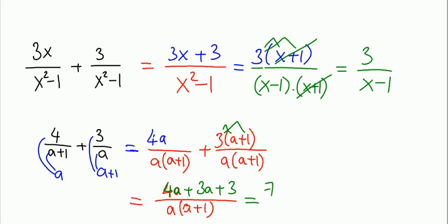So 7a plus 3 over a times (a plus 1) will be the final answer.